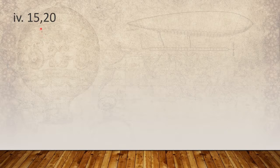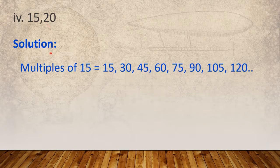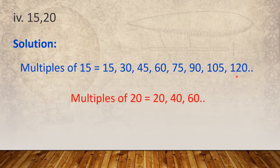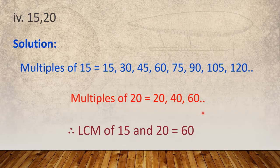Question number 4: Find the LCM of 15 and 20. Solution: Multiples of 15: 15, 30, 45, 60, 75, 90, 105, 120. Multiples of 20: 20, 40, 60, and so on. Here you can see 60 is the lowest common multiple. So LCM of 15 and 20 is equal to 60.